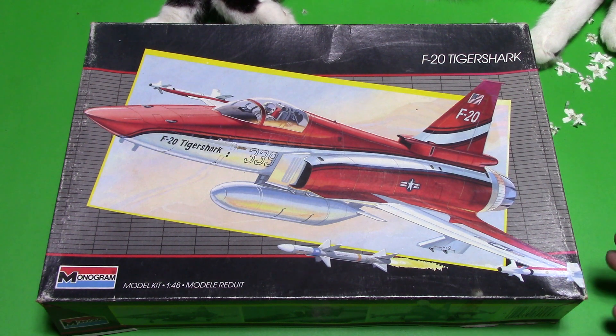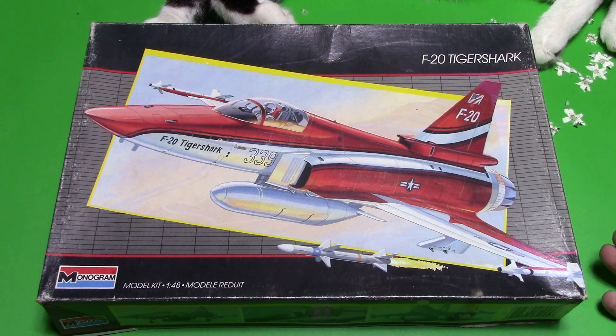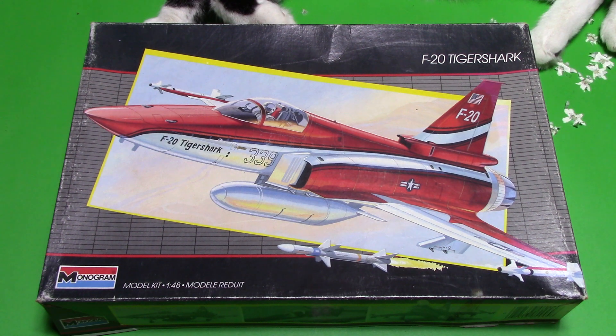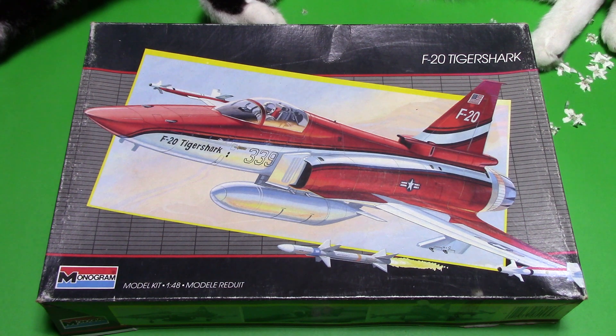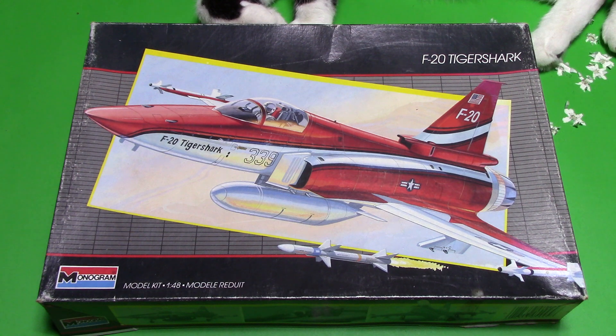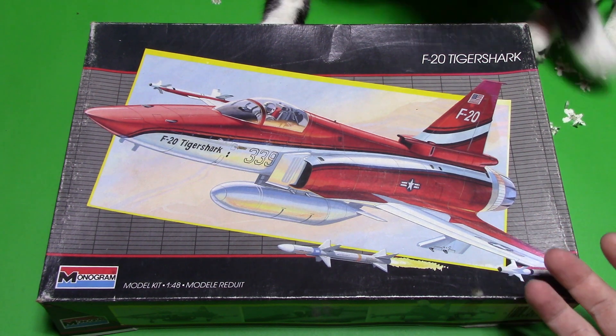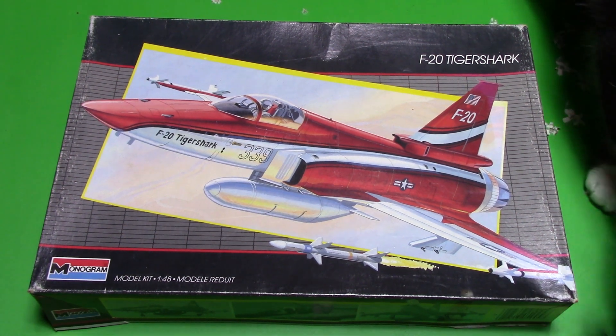I'm sort of going back to the old Monogram kits because they're just so beautiful, those old kits. The raised panel lines don't really bother me as much anymore as they once did. When recessed panel lines came in, everything had to be recessed. And now it's like I could kind of go either way as long as it's a decent kit. And these Monogram kits are always usually pretty excellent.